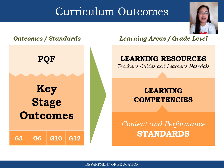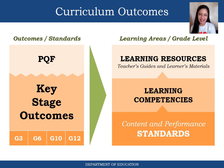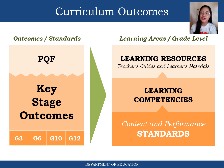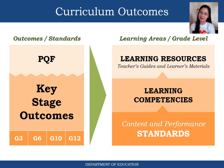The curriculum outcome shows how key stage outcomes are translated into content standards and performance standards, then into learning competencies and learning resources. This applies to Grade 3, Grade 6, Grade 10, and Grade 12. For each learning area and grade level, we have learning resources including the teacher's guide and the learner's materials or modules, all based on the learning competencies and content and performance standards.